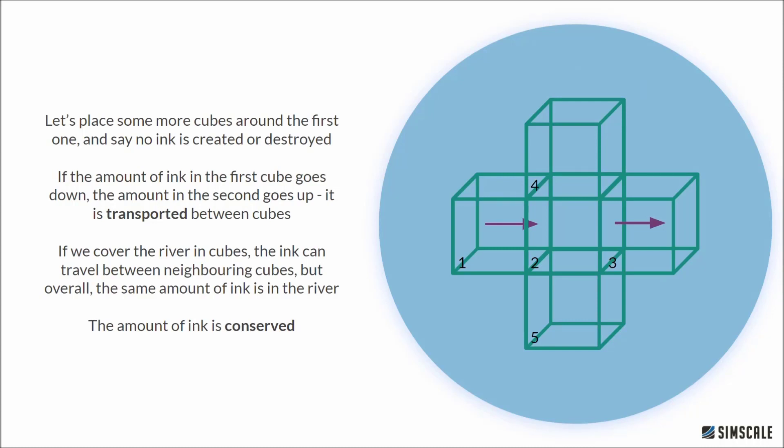If we covered the river in cubes, the overall amount of ink stored within the river and all the cubes won't go up or down. The total amount of ink is conserved. So although the ink can move between the cubes, the total amount of ink remains the same.